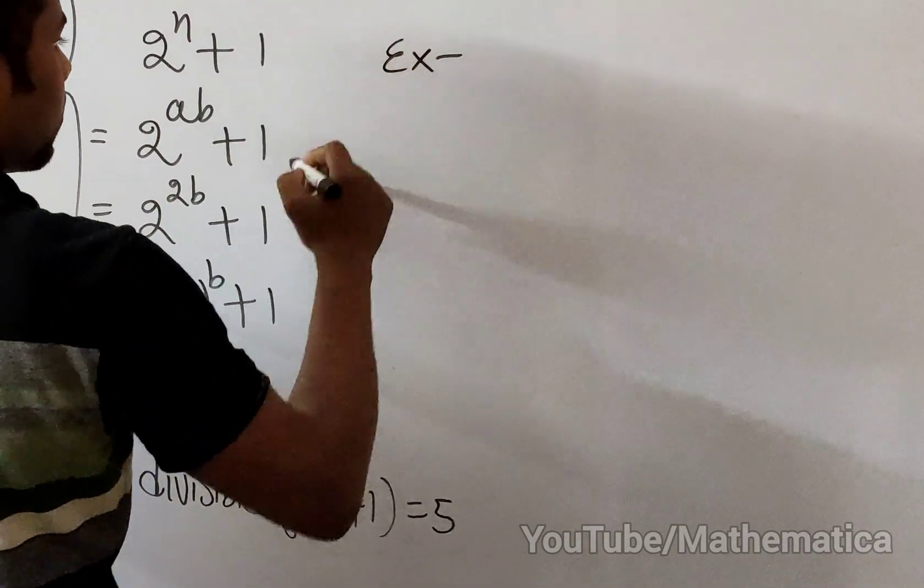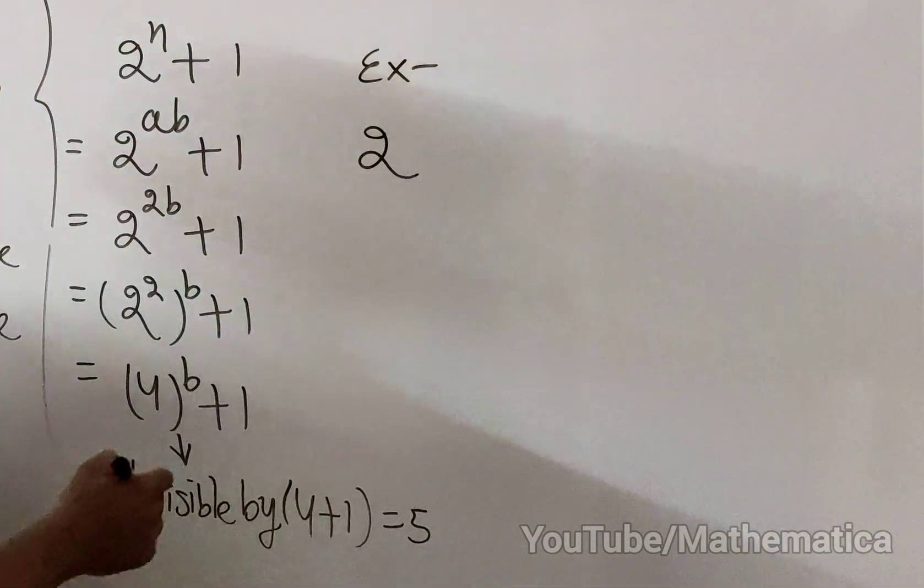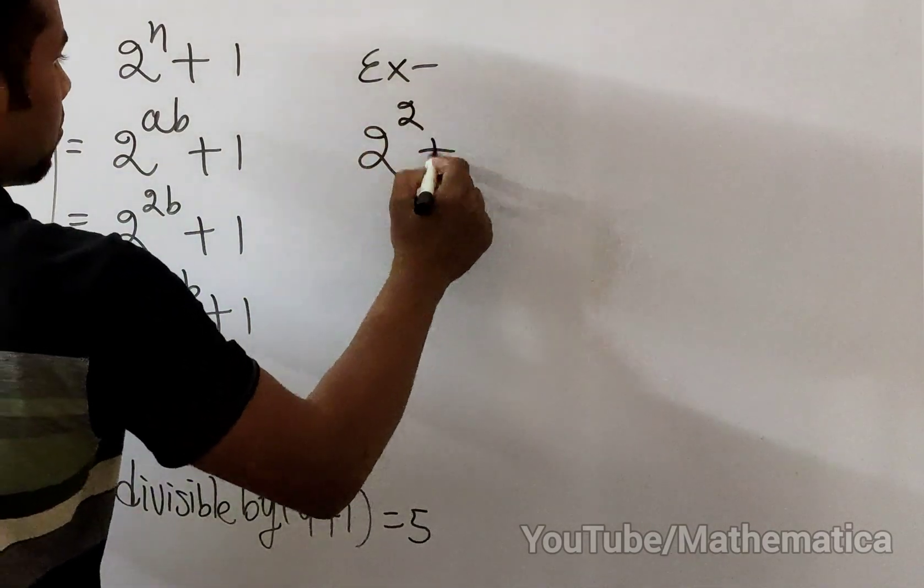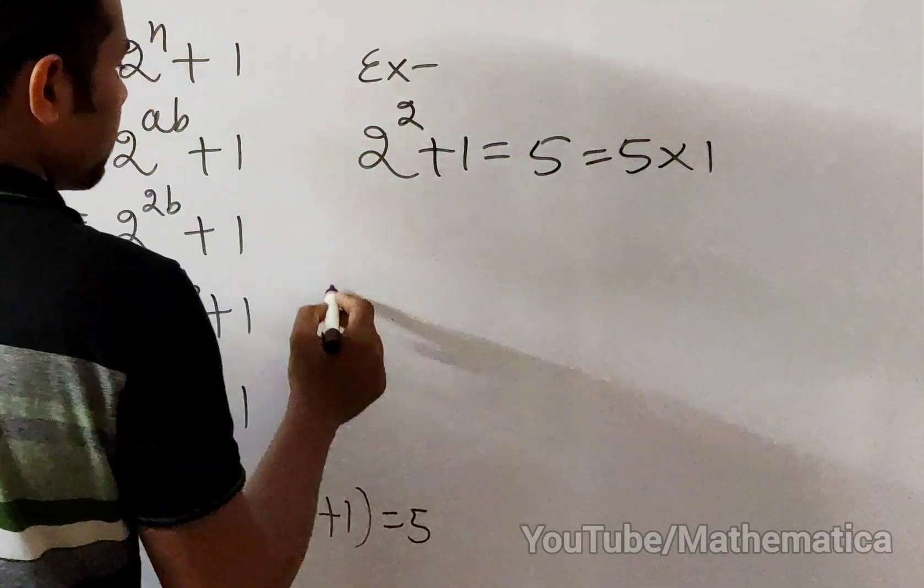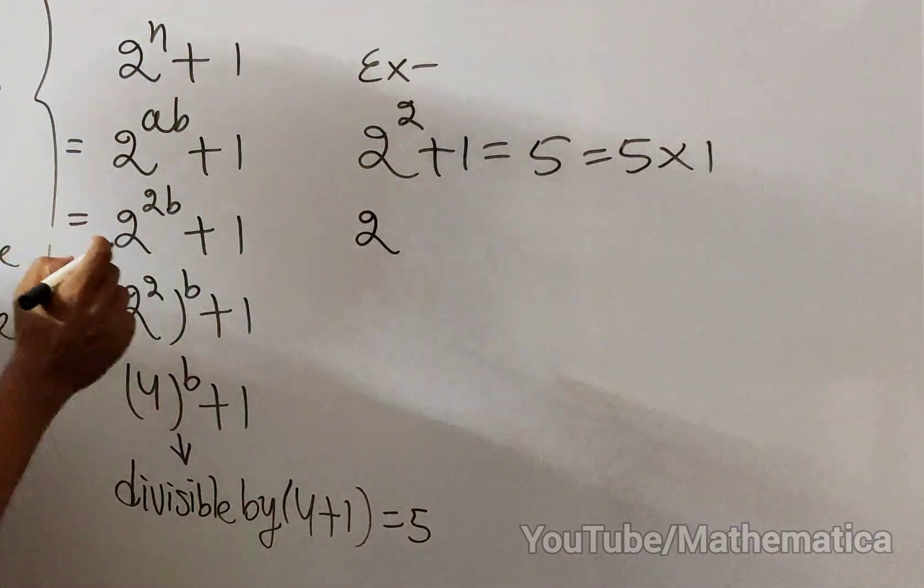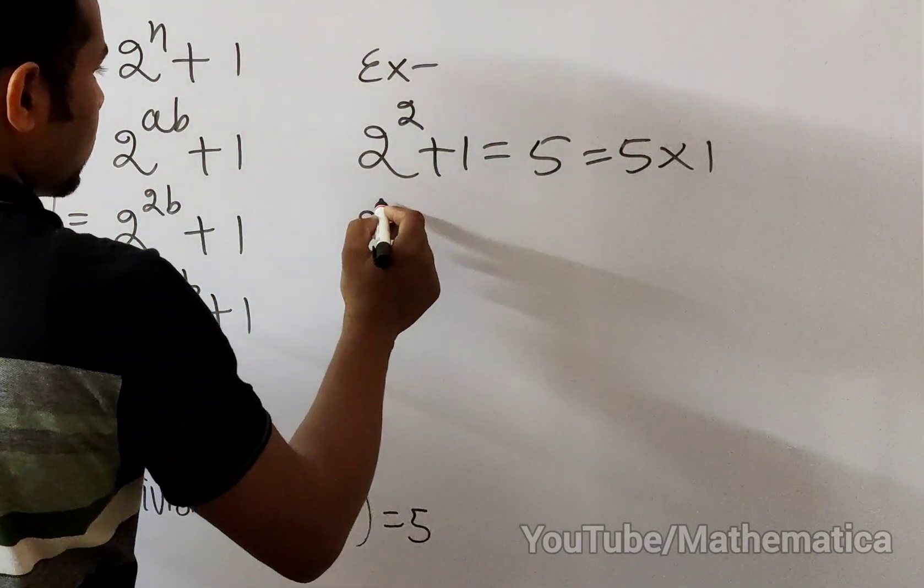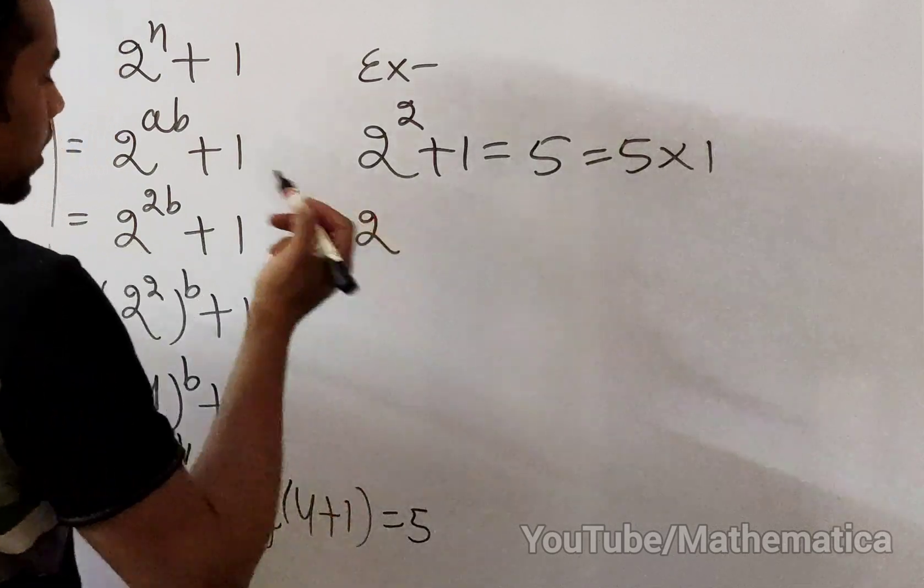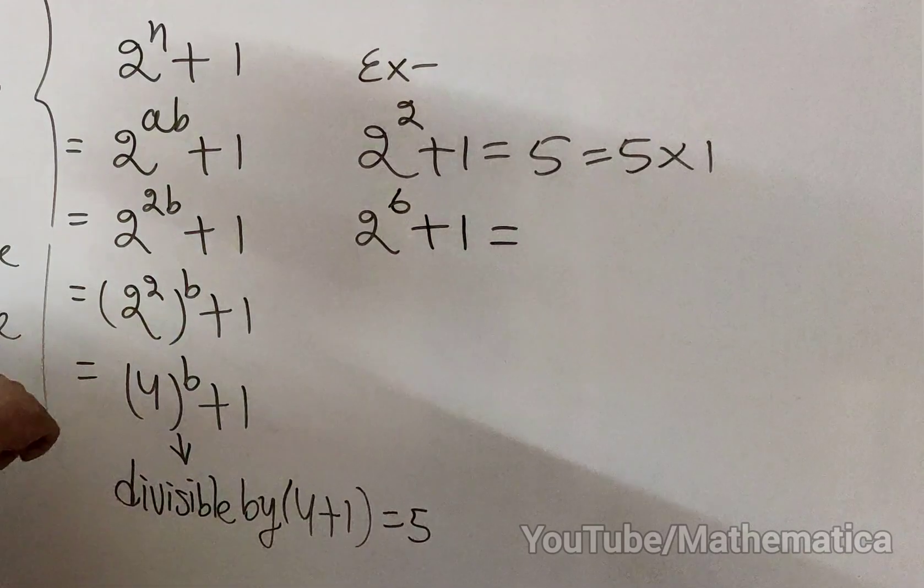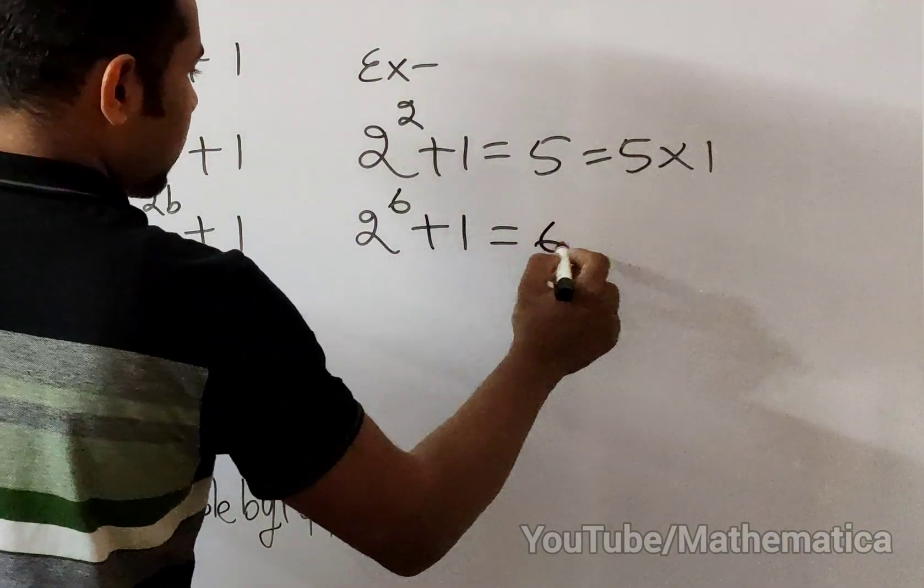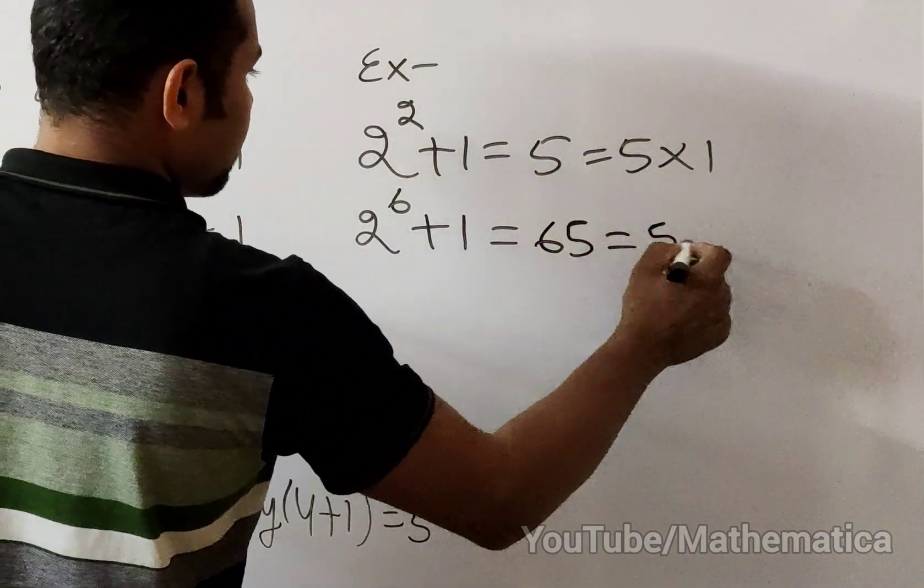Example: 2^2 + 1 equals 5, multiple of 5. Another example, even number like 6, this equals 65 and 65 is 5 into 13.